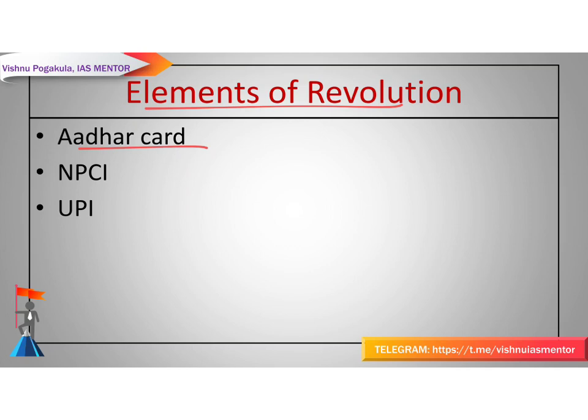Next is NPCI — the National Payments Corporation of India — an umbrella organization for operating retail payments and settlement systems in India. It is an initiative by the RBI and IBA (Indian Banks Association) under the provisions of the Payment and Settlement Systems Act 2007, to create a robust payment and settlement infrastructure. It has been incorporated as a not-for-profit company under Section 25 of the Companies Act 1956. Together with RBI and IBA, it established the UPI platform.